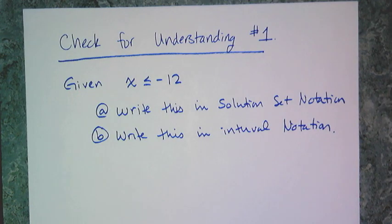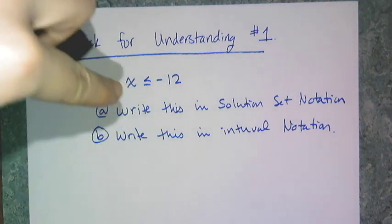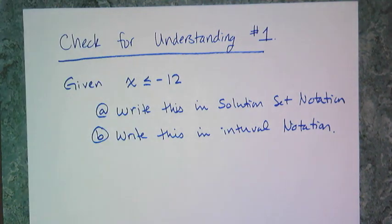For your first check for understanding, I want to make sure you can write solution sets for inequality. Given that you get the answer x is less than or equal to negative 12, I want you to write this in solution set notation for a, and for b, write it in interval notation.